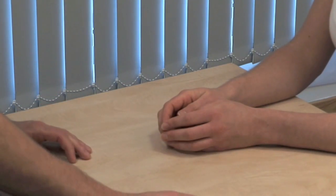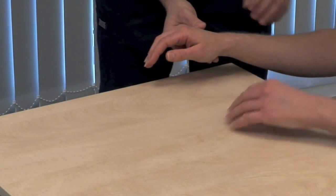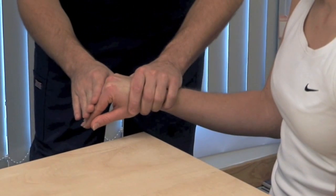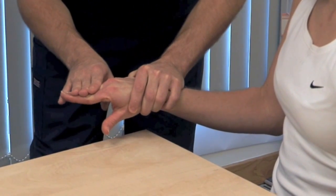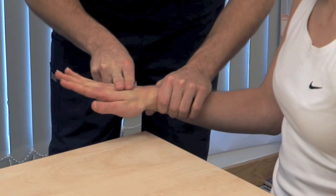Next, we test radial nerve motor function. Can I take this hand? Starting with finger extension. Now push your fingers out straight against me. Then wrist extension. Now push your hand up against me.